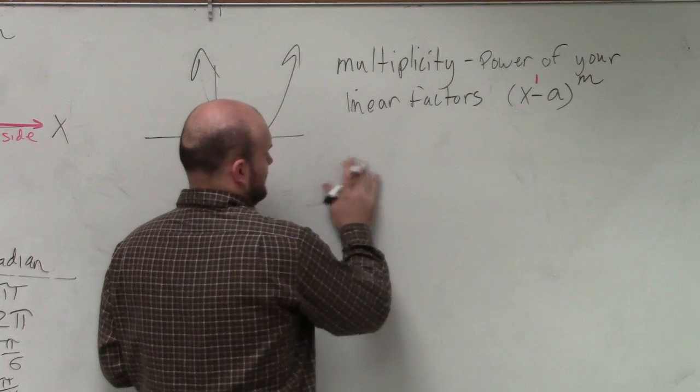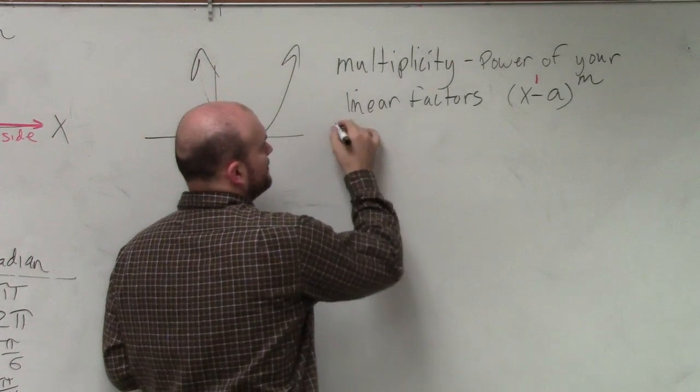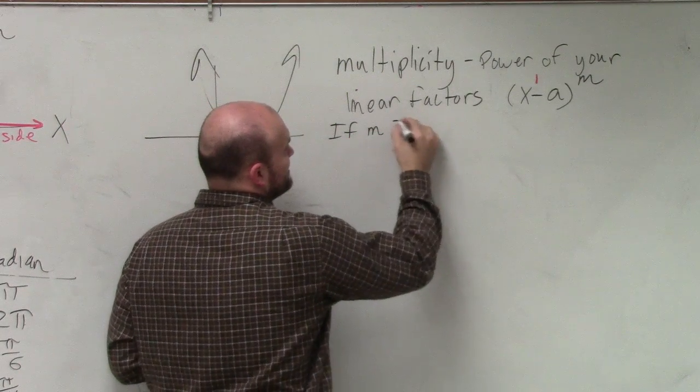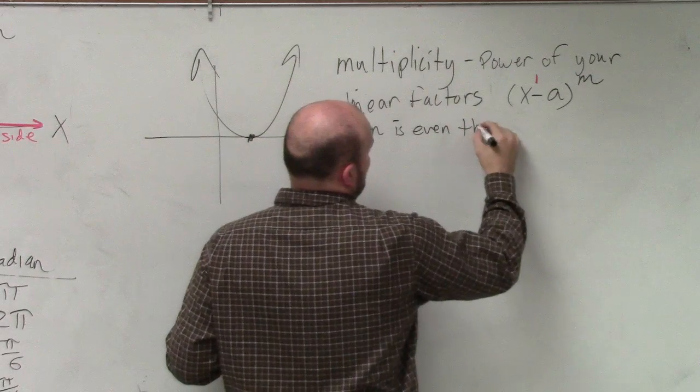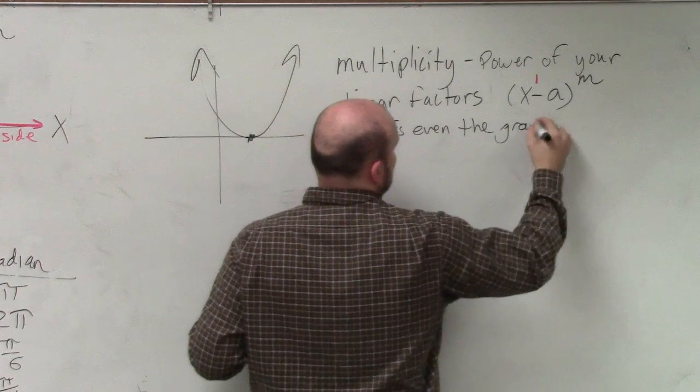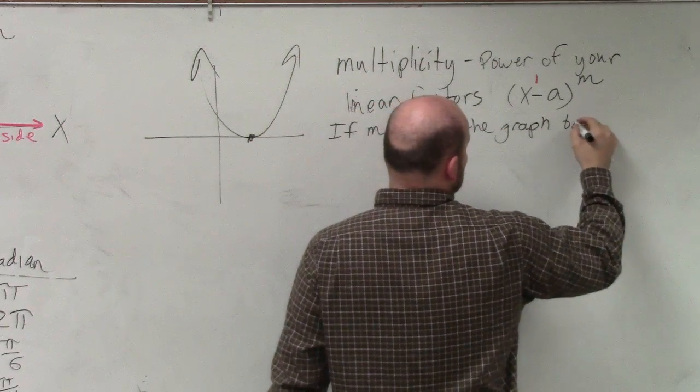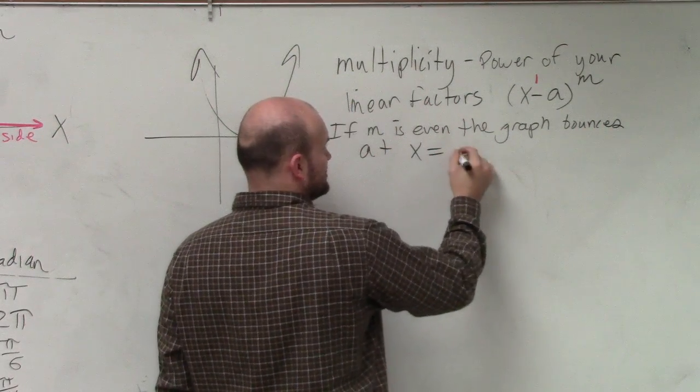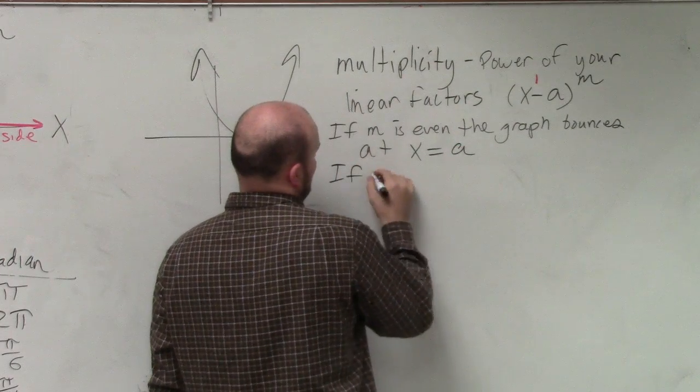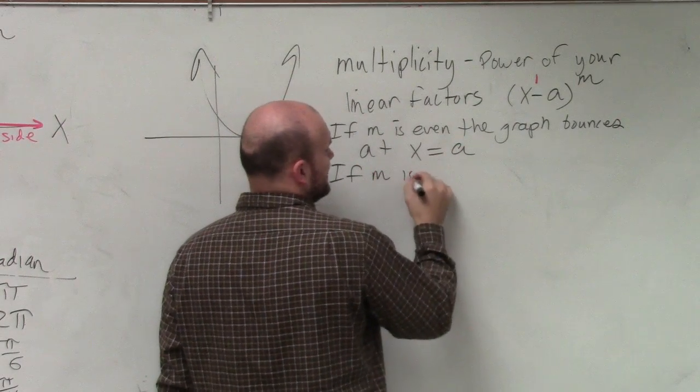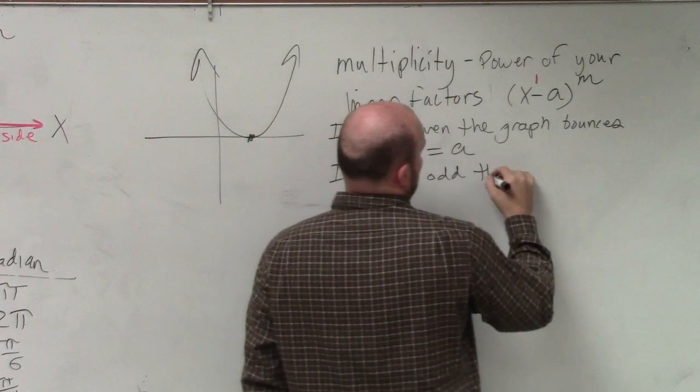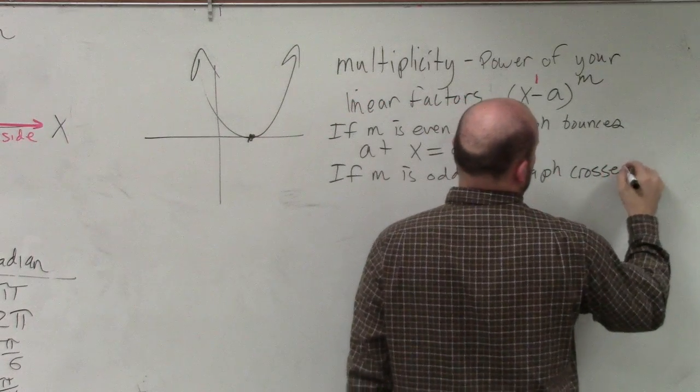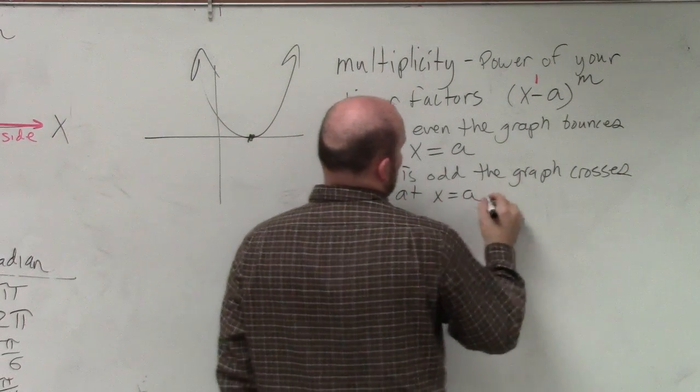Now, this is what's really important. If M is even, the graph bounces at x equals a. If your multiplicity, or M, is odd, the graph crosses at x equals a.